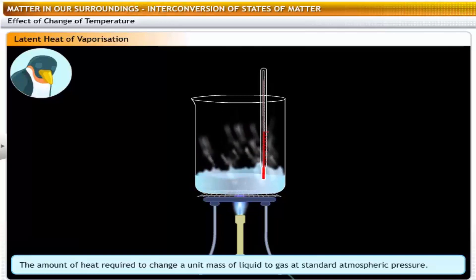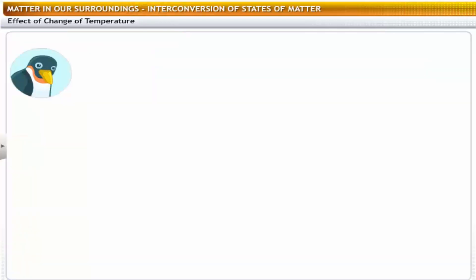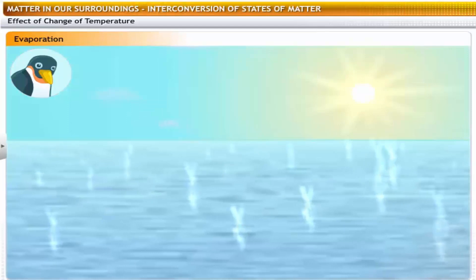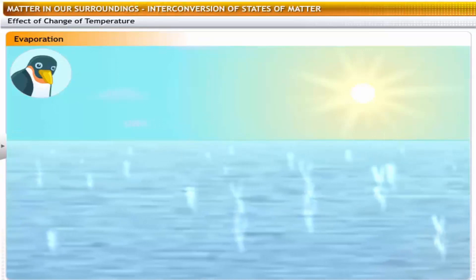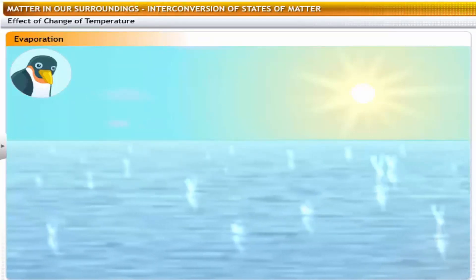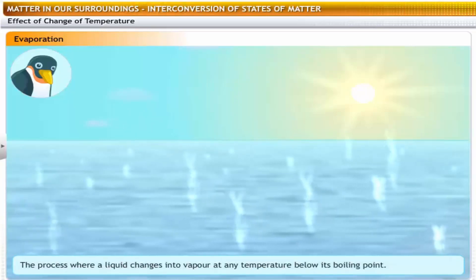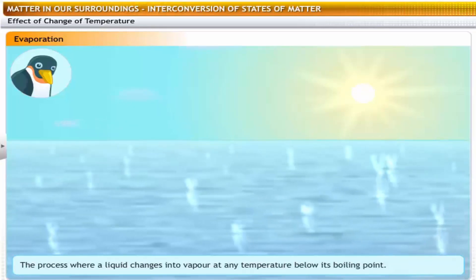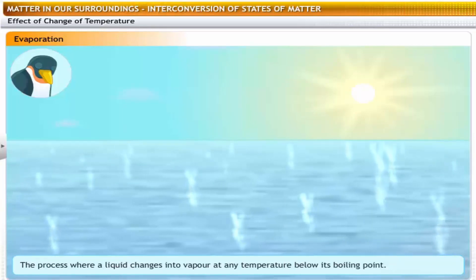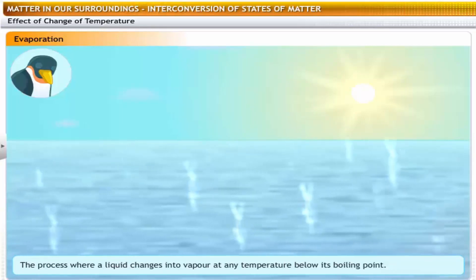Every time matter changes state, latent heat is taken in or given out. But do we really need to heat things to change them from one state to another? Not necessarily. For example, sea water absorbs the heat from the surroundings and vaporizes, leaving behind the salt that was dissolved in it. This process is known as evaporation. A process where a liquid changes into vapor at any temperature below its boiling point is called evaporation. Evaporation occurs only at the surface of the liquid.